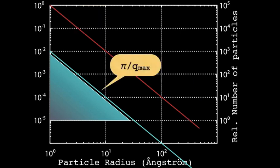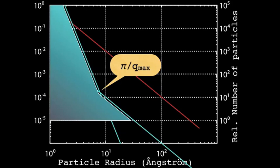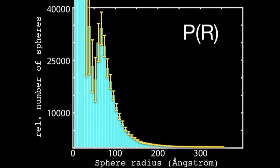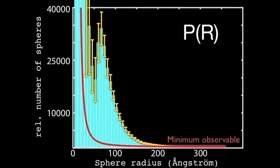Beyond pi over q_max, the observability scales with radius to the sixth power, so that area is additionally not visible and doesn't contribute significantly to our scattering pattern. This means that in these particle size distributions we can easily show a line indicating the minimum observable number of particles. I think it's very important to do this because it tells you exactly what constitutes a significant contribution to the scattering pattern.